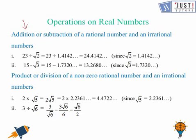The next is about product or division. The product of 2 times √5 gives us 2√5, which is an irrational number. Similarly, if we divide 3 by √6, this is equal to √6 over 2, which is also an irrational number.